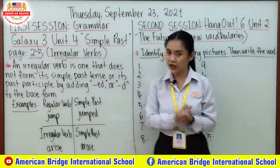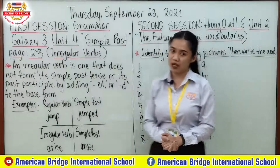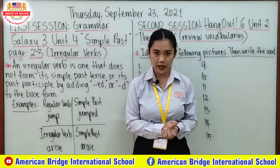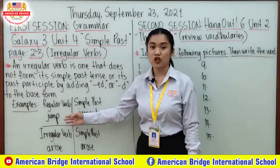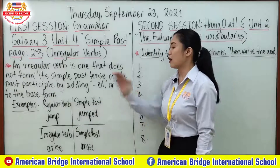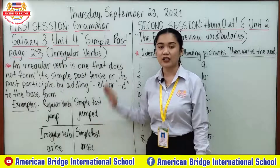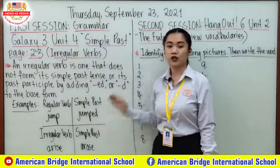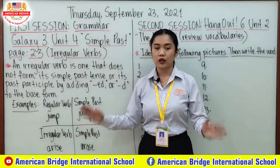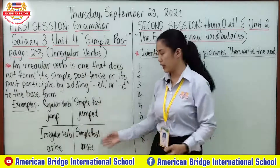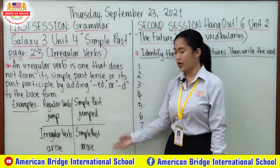Here's an example for you to understand the difference between the regular form and the irregular form. As you remember yesterday, we talked about simple past in regular verb. For example, 'jump' — if we use this regular verb in simple past, we add -ed at the end of the word. That is what you call a regular verb in simple past. Now, how to use an irregular verb? Irregular verbs don't add -ed or -d at the end. For example, 'arise' — we don't say 'arised,' we say 'arose.'